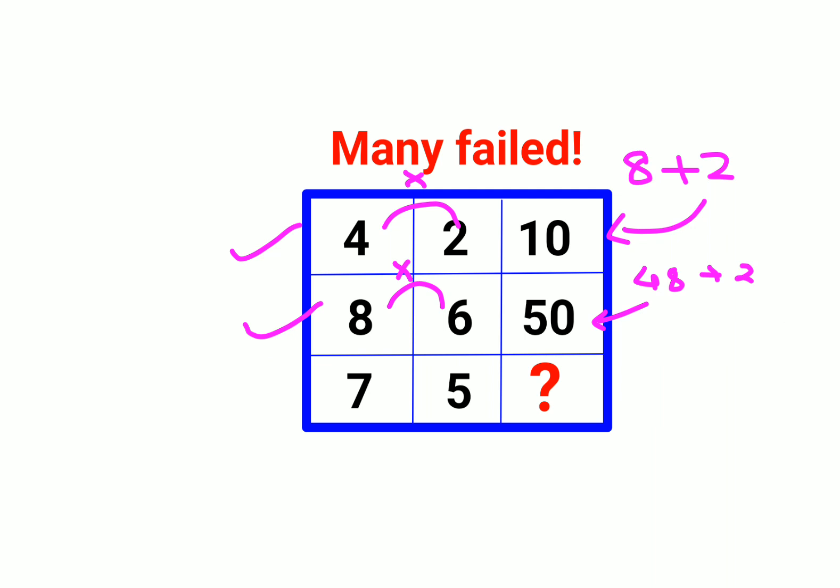So let's try the same for this one. That is 7 into 5, that gets you 35, plus 2 means the answer for this question mark is supposed to be 37.